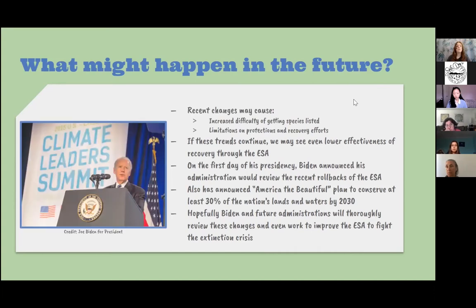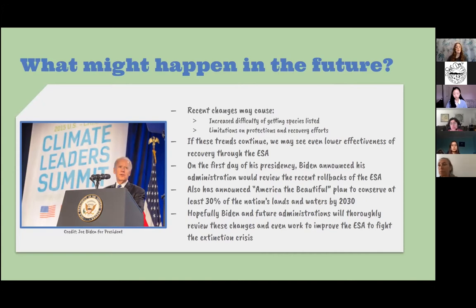A little hope for the Endangered Species Act: on the first day of his presidency, Joe Biden announced that his administration would review the recent rollbacks of the ESA. Biden has also announced America's Beautiful plan to conserve at least 30% of the nation's lands and waters by 2030 — and if we're protecting habitat, we are going to be protecting species. Hopefully Biden and future administrations will review these changes and possibly work to improve the ESA so that we can fight the extinction crisis.